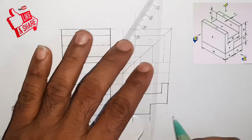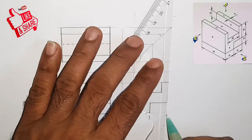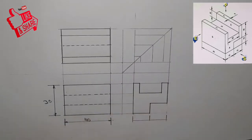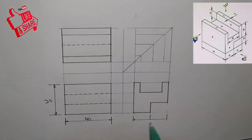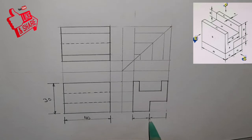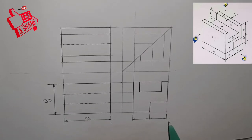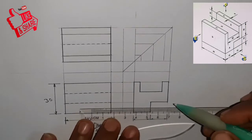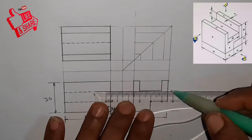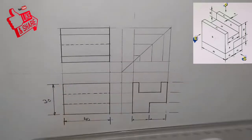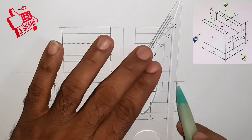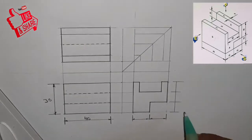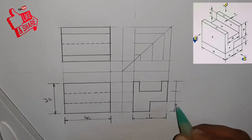Select the side view of the horizontal side. We have 2 dimensions of the angle. The height of the image is 10mm, and the height of the image is 30mm.